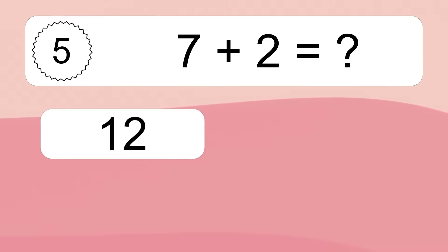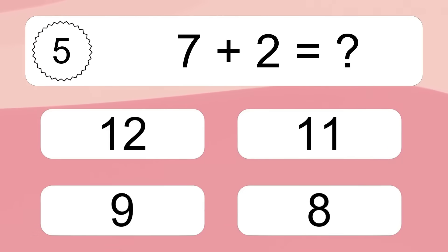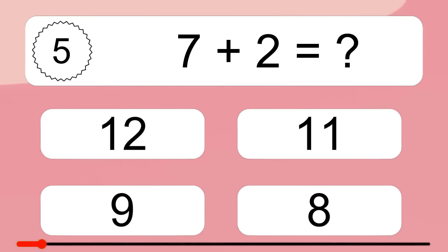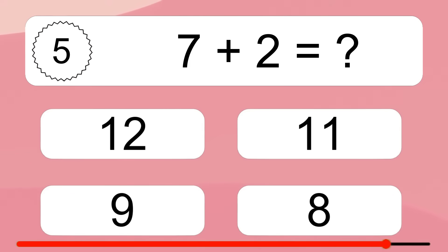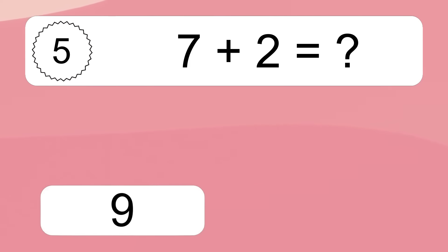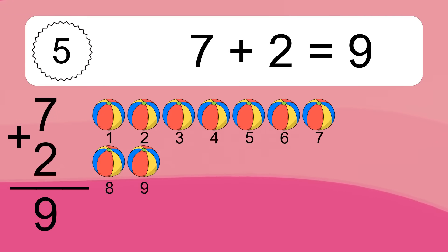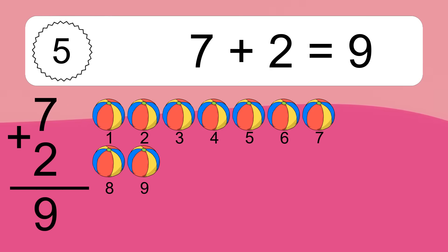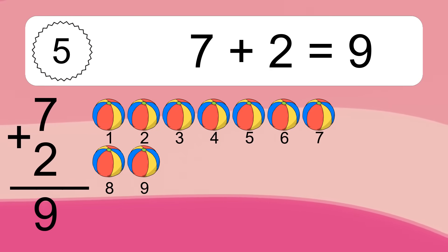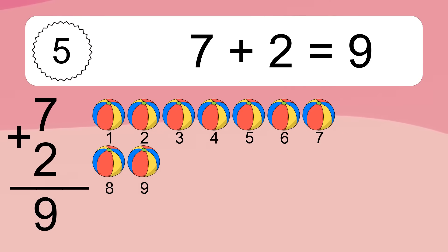7 plus 2 equals what? 7 plus 2 equals 9. Let's count it: 1, 2, 3, 4, 5, 6, 7, 8, 9.